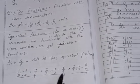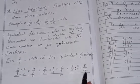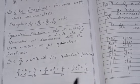2 into 3, 6 and 3 into 3, 9. Now, 2 into 4, 8 and 3 into 4, 12. So, this is how we will get the equivalent fractions.